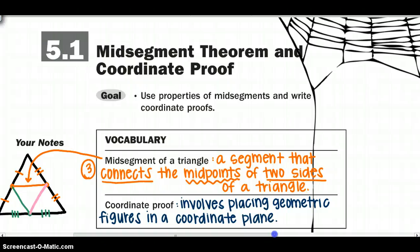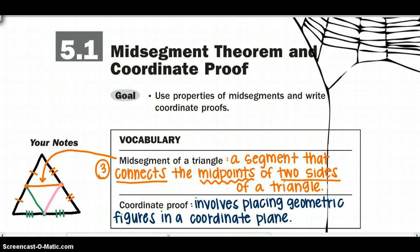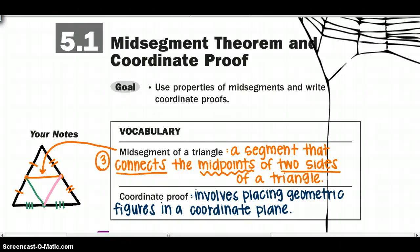The second vocabulary term is coordinate proof. This involves placing geometric figures such as squares, triangles, and hexagons into a coordinate plane — remembering that the coordinate plane is the xy-axis.